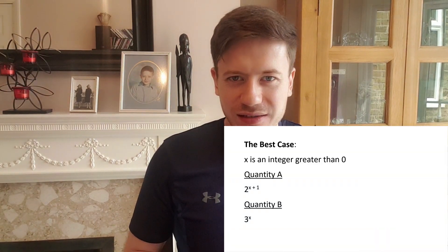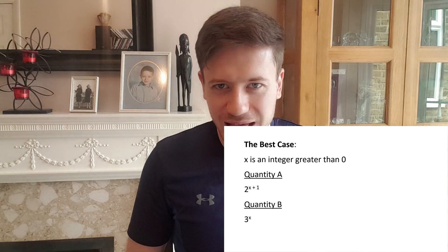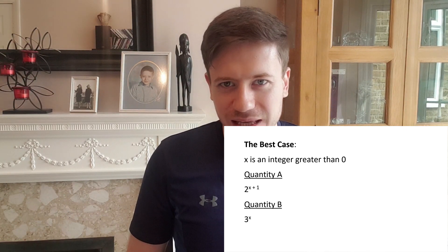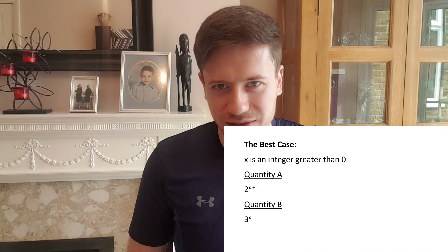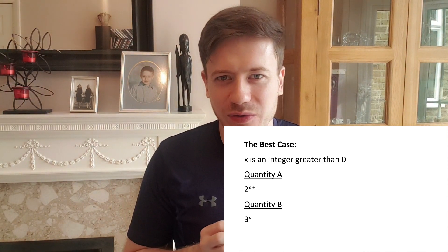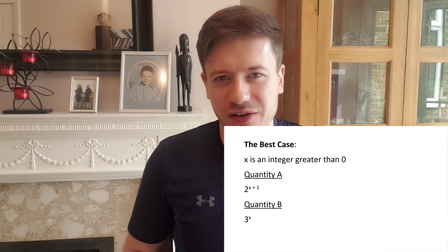x is an integer greater than zero. Quantity A is 2 to the power of x plus 1 and quantity B is 3 to the power of x. By the way this question is almost identical to the one found on page 166 of the official guide.